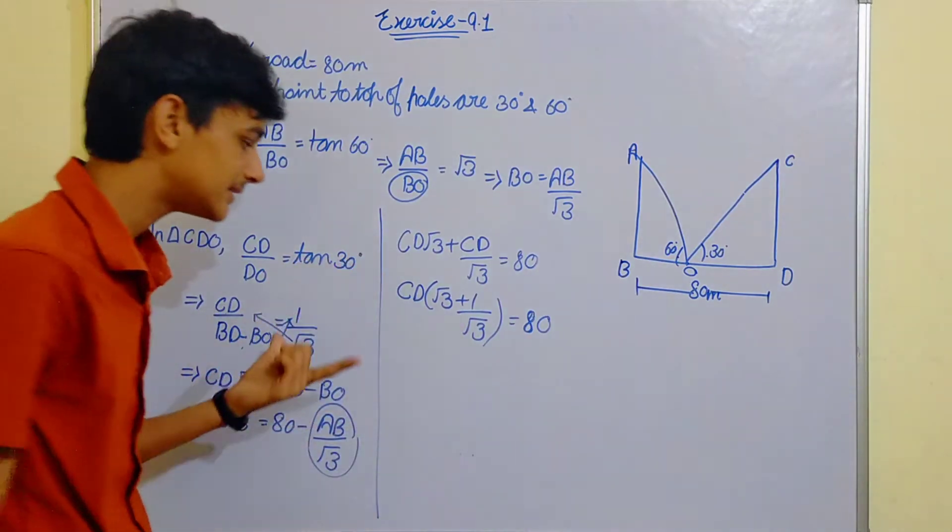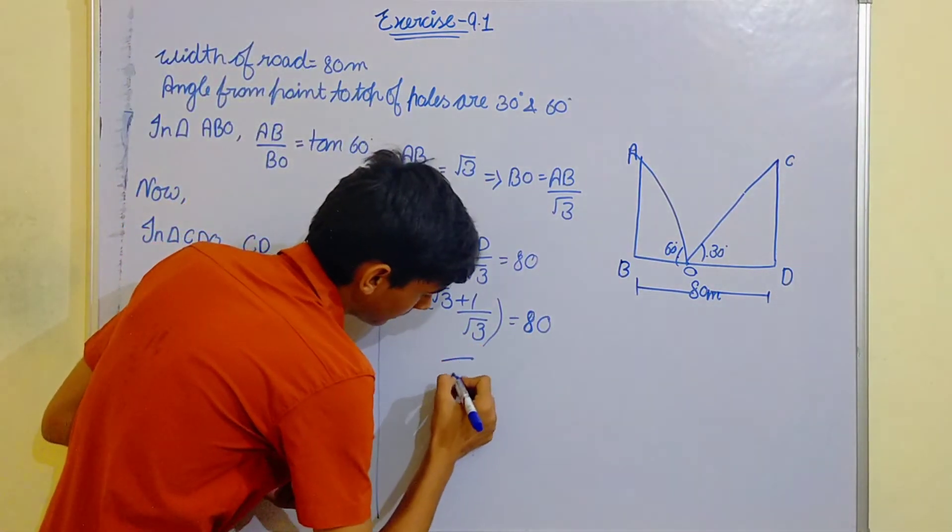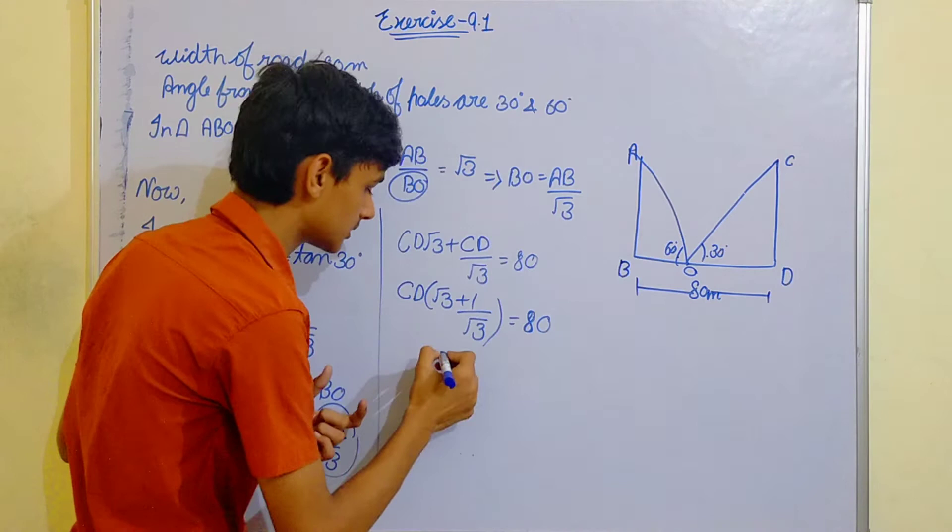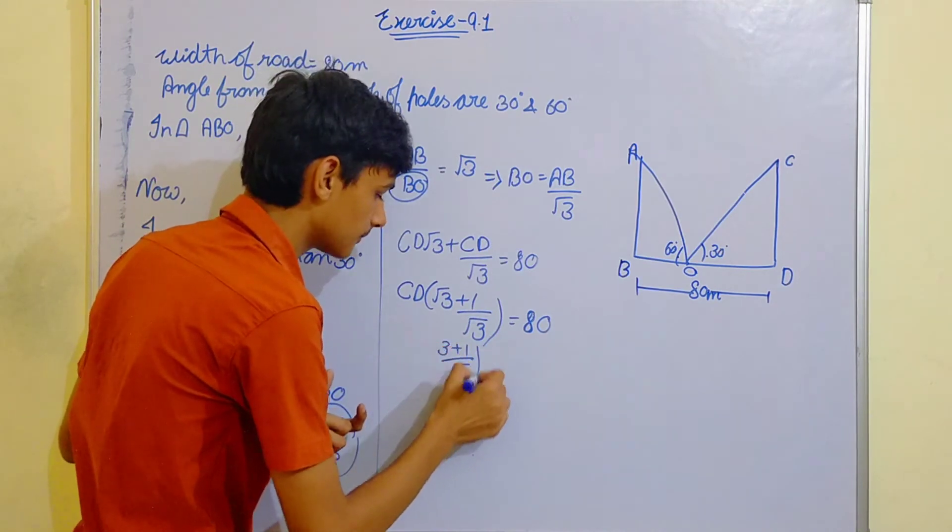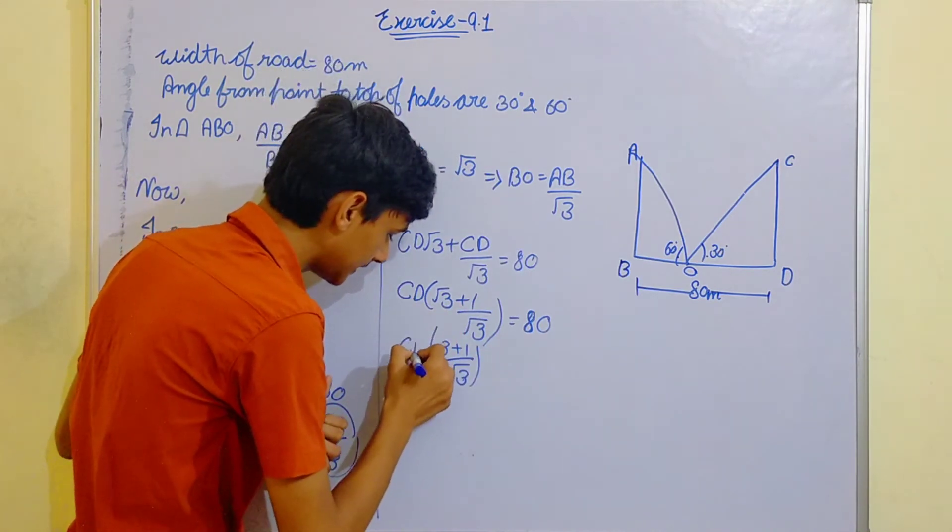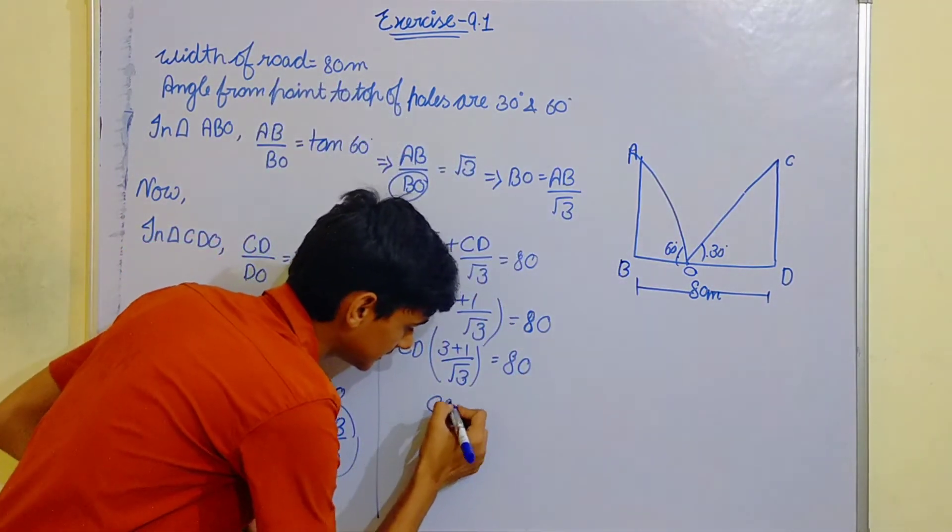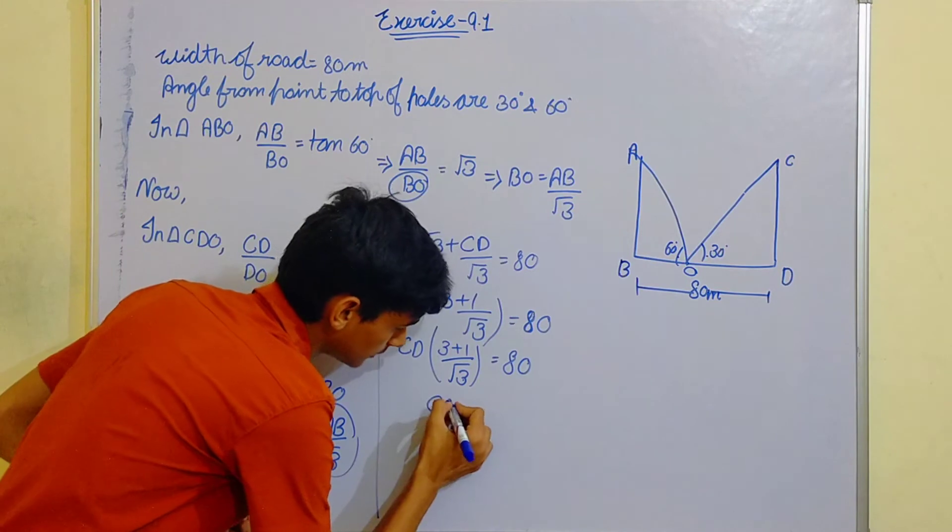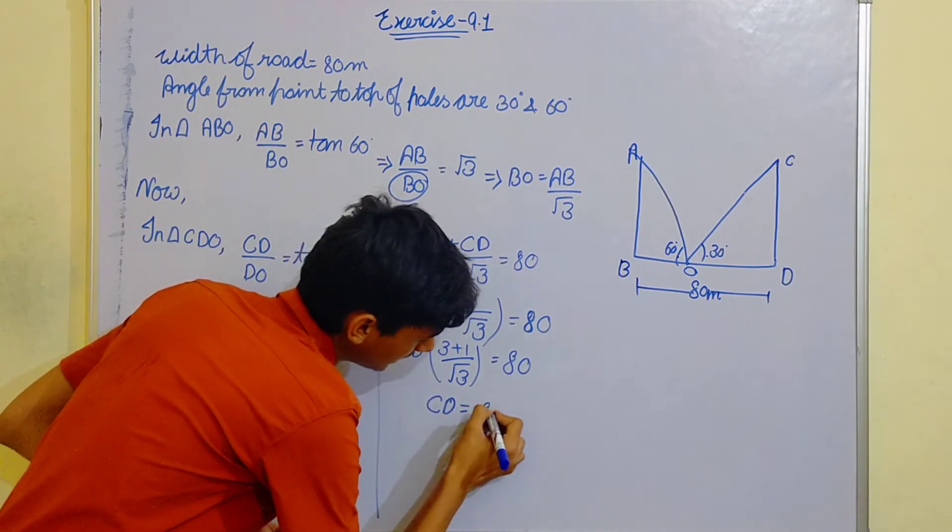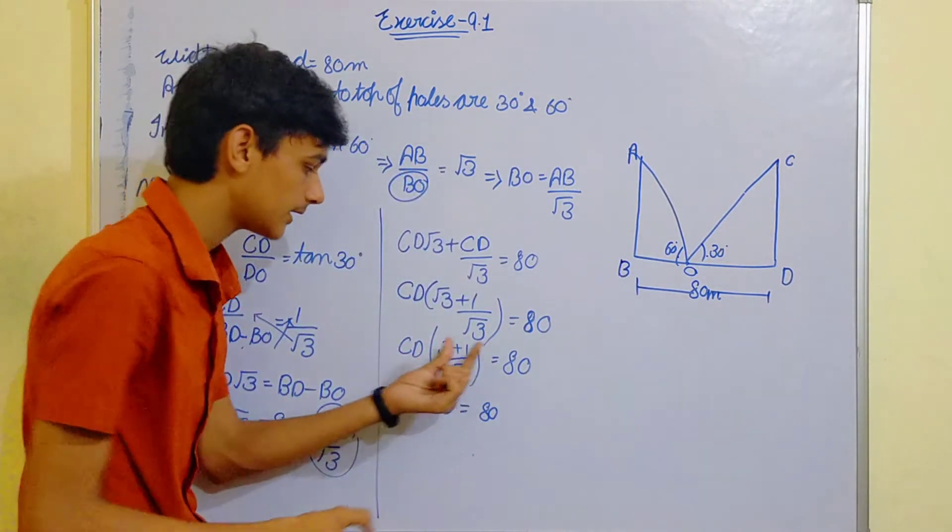So we can write CD in place of AB. CD into root 3 plus 1 by root 3 which is equals to 80. Now take the LCM, root 3, so 3 plus 1. CD is equals to 80 root 3